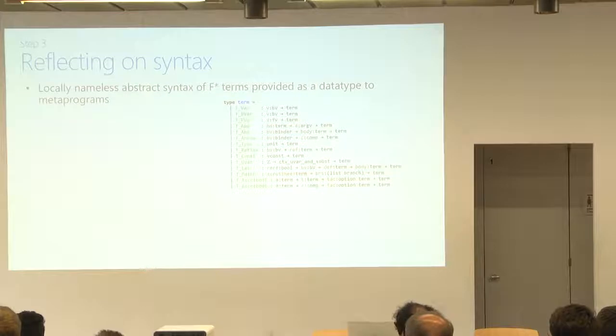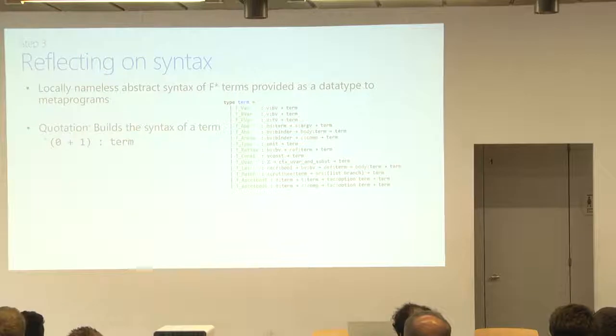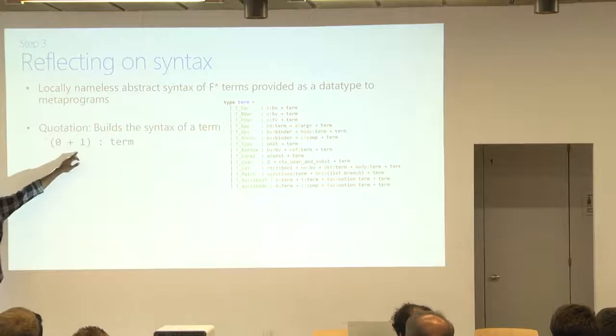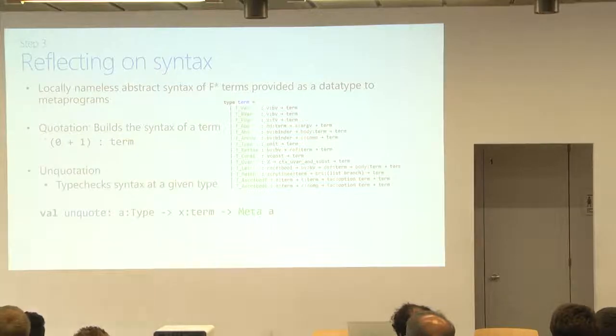Now, reflecting on syntax, core syntax of F-star is a data type that looks like that with maybe 12 different forms, 15 different forms. And this syntax is now available to F-star programs to inspect as a data type. And you can quote a piece of syntax. This is, you can think of this as a callback into F-star's desugaring. You wrote a piece of concrete syntax and the quote tells F-star, parse it, desugar it, give me back something in that data type. And you can unquote things. You can say, give it a piece of syntax, call back into the type checker and check that it has a particular type. And that's what unquote looks like.